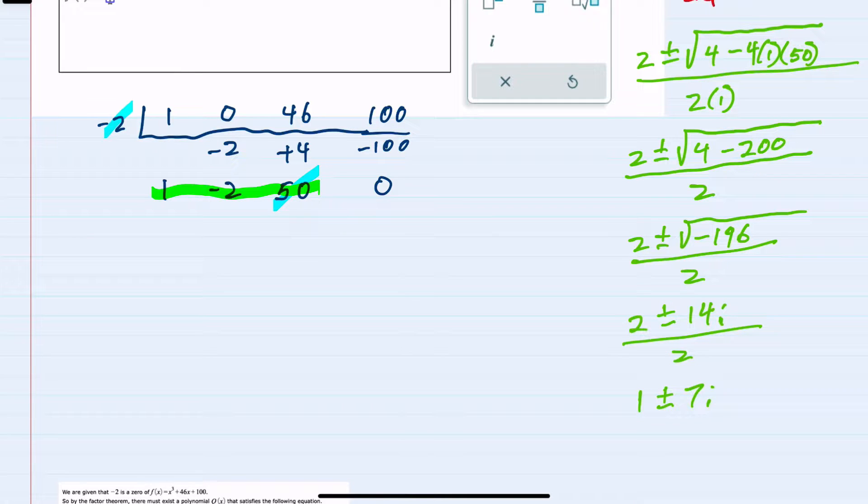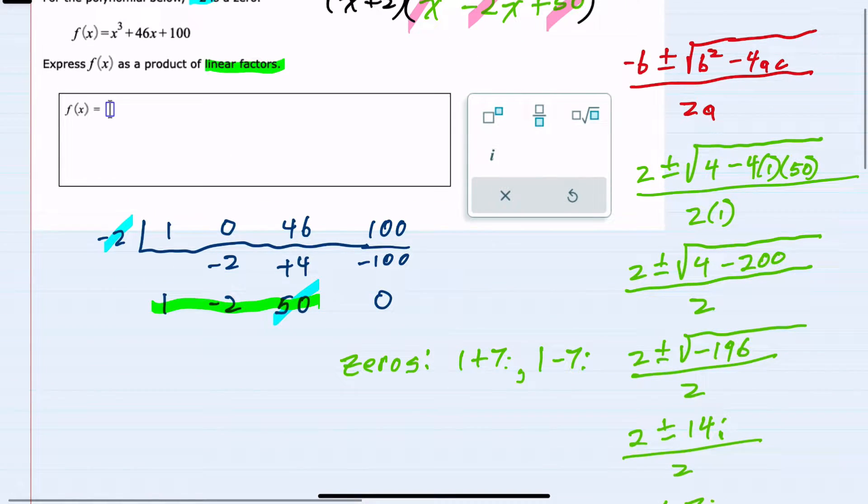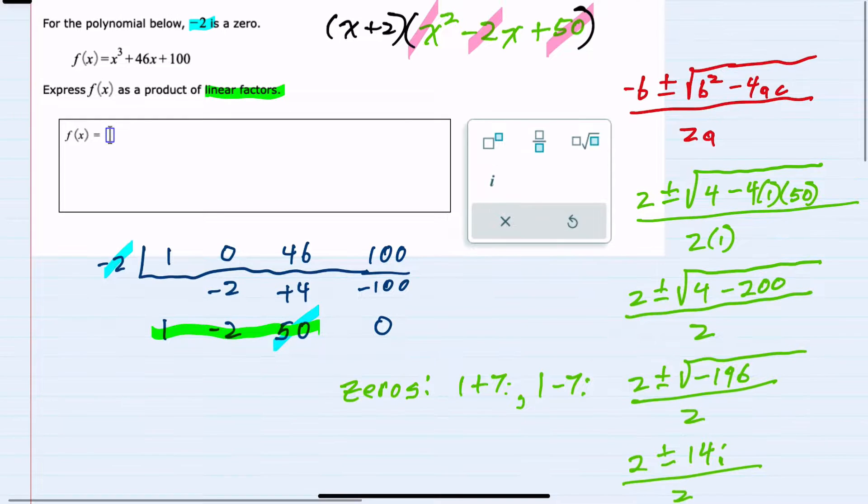So we found two more zeros. We have 1 plus 7i and 1 minus 7i. Looking back at our instructions, though, we're not looking for the actual zeros. We're looking to write f of x as a product of linear factors. We've already identified one of those linear factors as x plus 2.